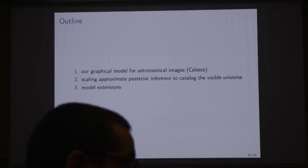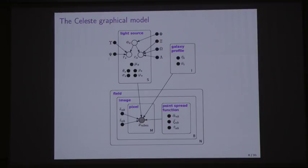First, here's the model. You'll see at the bottom are images, which are organized in the sky into fields. Fields are about a quarter degree by a quarter degree of the sky. Each field has been imaged B times in this model through different filter bands. B is about five typically, and the filter bands control what energy of photons can reach the camera. The pixels, there are M of them per image, and the pixels' values are denoted X_NBM in this model.